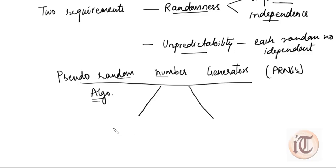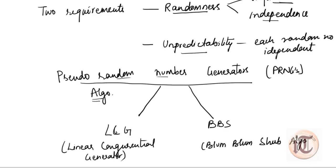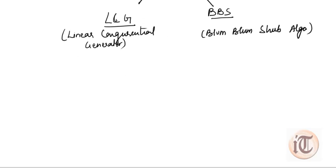The first algorithm is called LCG, which stands for Linear Congruential Generator. This is the first algorithm used to generate pseudo random numbers. The second algorithm is called BBS, that is the Blum Blum Shub algorithm. In this video we are going to discuss the first algorithm, LCG, and in my upcoming video I will discuss BBS.